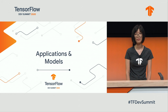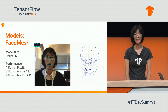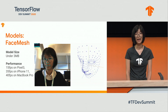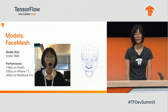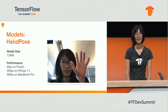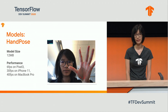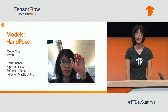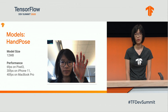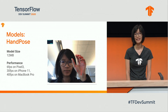Now let's take a look at some of the new applications and models we and our users built this year. First, we introduce the face mesh model. This model is able to recognize 600 facial points, its size is under three megabytes, and we've seen good performance on high-end phones and desktops — it performs inference at 35 FPS on an iPhone 11. Next, we introduce the hand pose model. This model has a weight size of 12 megabytes and also shows good performance on modern phones and desktops. It's worth mentioning that applications enabled by face mesh and hand pose are only possible when running on device, because the experience needs to be in real time, and TF.js enables this.